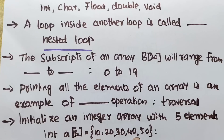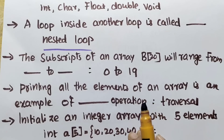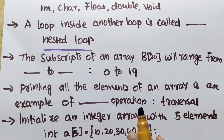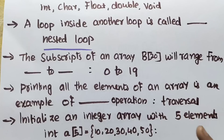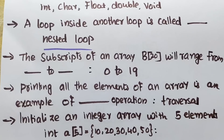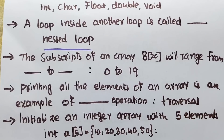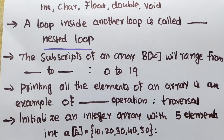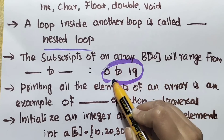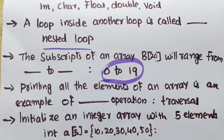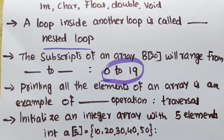The subscript of an array B with bracket 20 will range from 0 to 19.